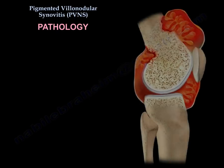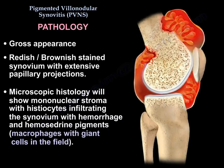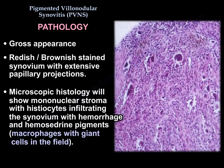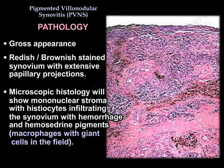Regarding pathology, the gross appearance shows reddish-brownish stained synovium with extensive papillary projections. Microscopically, the histology shows mononuclear stroma with histiocytes infiltrating the synovium, along with hemorrhage and hemosiderin pigments, macrophages, and giant cells in the field.